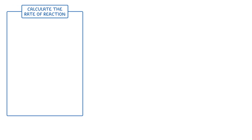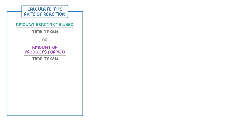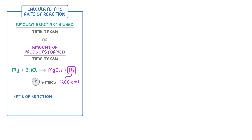We saw in the previous video that we can calculate the rate of reaction by dividing either the amount of reactants used, or the amount of product formed, over the time taken for that change to occur. For example, if this reaction between magnesium and hydrochloric acid produced 1200 cm³ of hydrogen in 4 minutes, then our rate would be equal to 1200 over 4 times 60, or 240 — so it would be 5 cm³ per second.